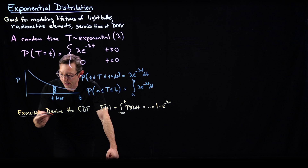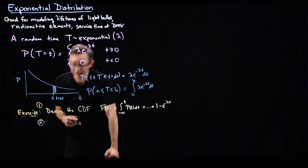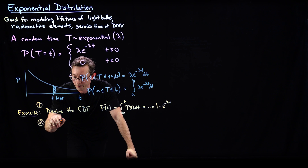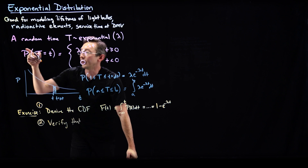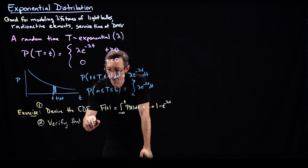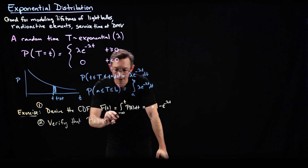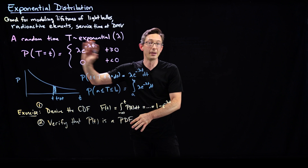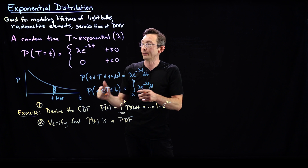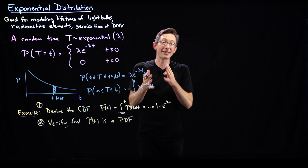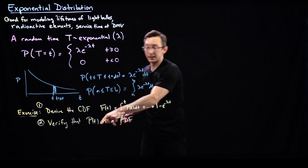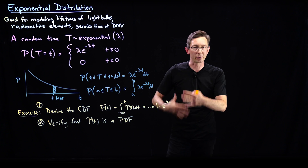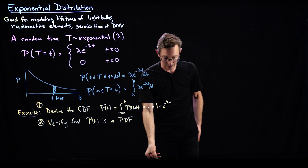The second exercise is to verify that p(t) is a probability density function — verify that the integral of p(t) from negative infinity to positive infinity equals 1, meaning the probability adds up to 1 over all time. These are two really helpful exercises to get a handle on how to work with this exponential object.